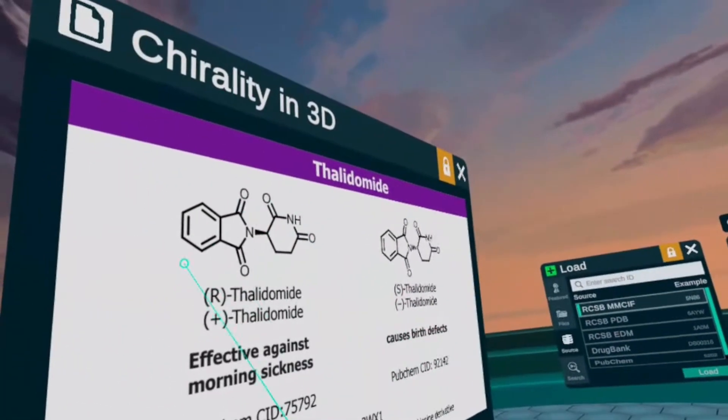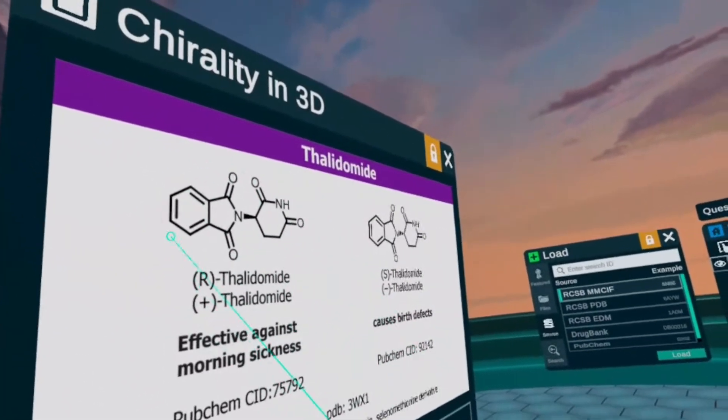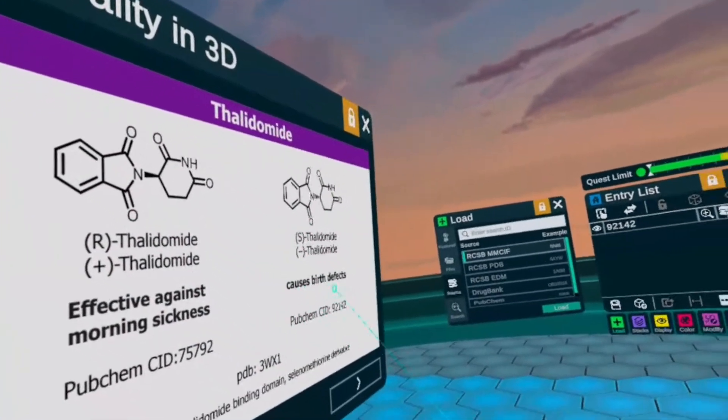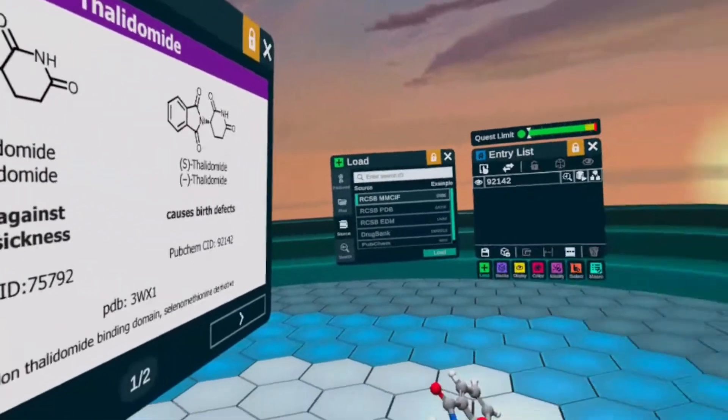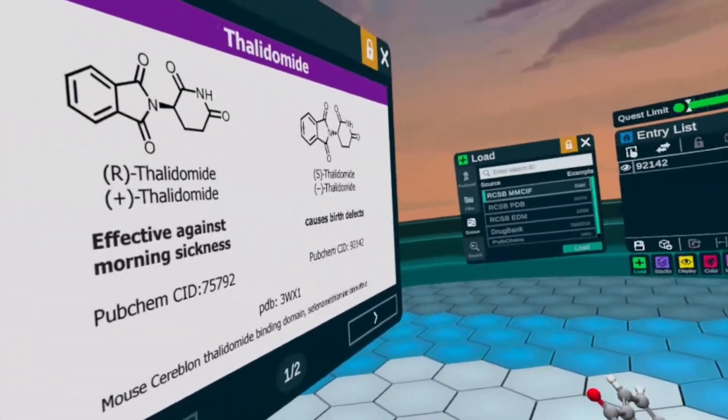Okay, the molecule that we're going to be talking about today is thalidomide, and one isomer is effective against morning sickness, and the other one can cause birth defects.